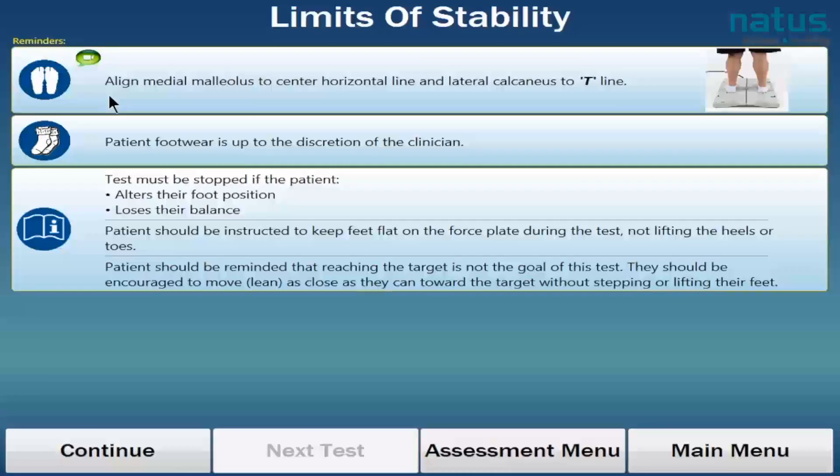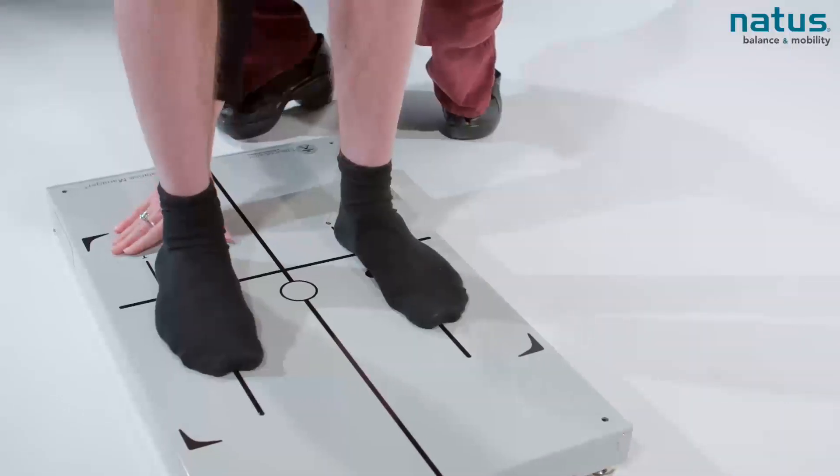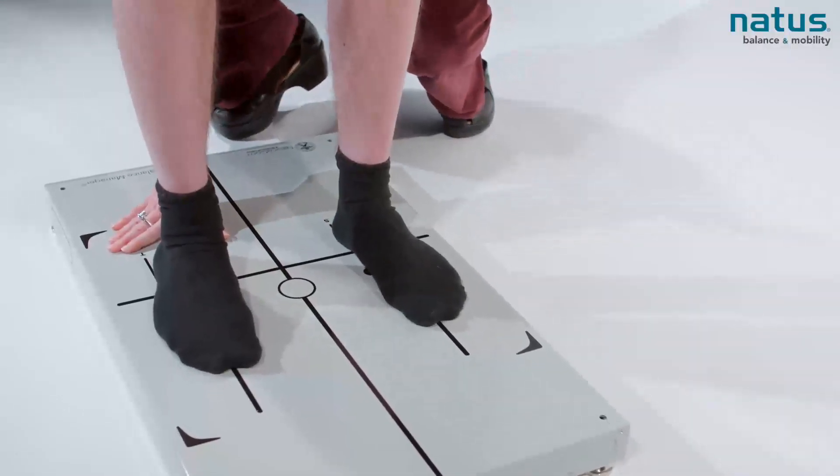The next instruction talks about his lateral calcaneus, or the outside of his heel. And that should be lined up with the T line. And you can see the T line on both sides of the force plate.